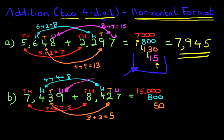And lastly, we've got the units. We've got 9 units here, adding to 7 units. So we've got 9 plus 7 is 16. So let's write this down.